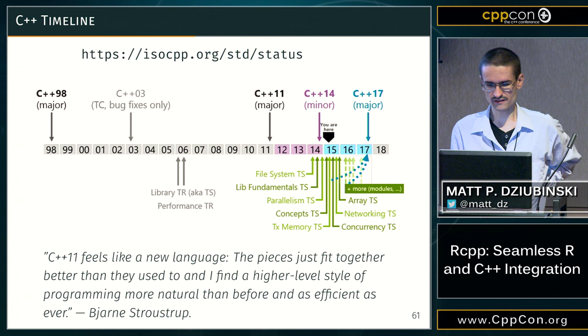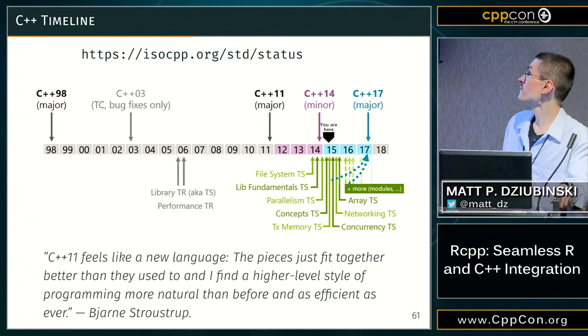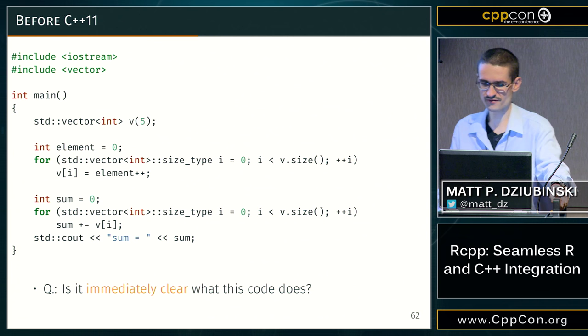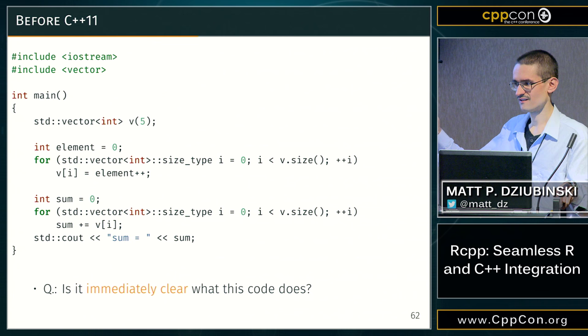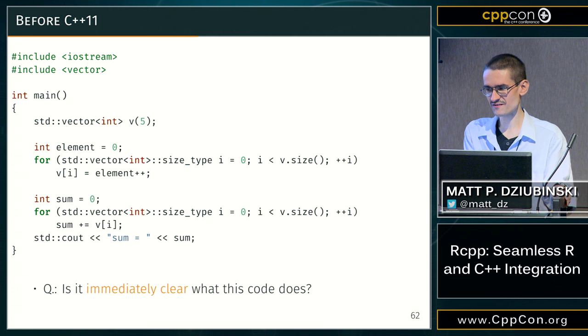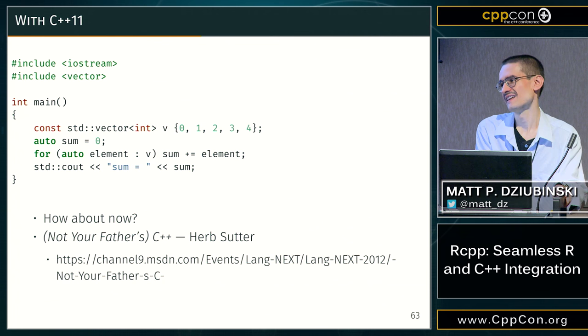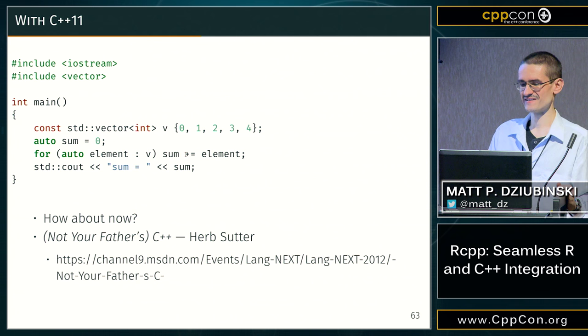There's a parallel in C++ development that explains this growth: something happened around 2011 and 2014 — the language changed quite a bit. Here's how we used to write code before C++11. Compare that to the modern style: it's declarative — you can read it left to right, top to bottom, and it does exactly what you expect. Herb Sutter's phrase 'this is not your father's C++' explains the popularity of C++11 and 14.